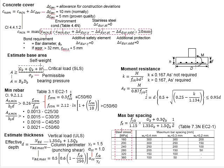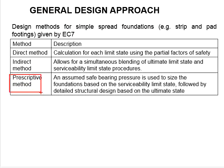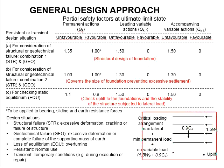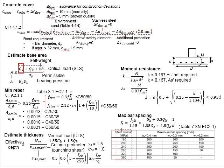Next, we discuss about the estimations of the size of the base. Based on the prescriptive method, we determine the size of the foundations based on the serviceability limit state. The contact area of the base to the ground, determined by the width times the length of the base, should be at least greater than the critical load due to the serviceability limit state divided by the permissible bearing pressure of the soil. This critical load constitutes GK, QK, and also the self-weight of the pad foundations. The factors of safety for all the actions will be equal to 1.0 due to the serviceability limit state.